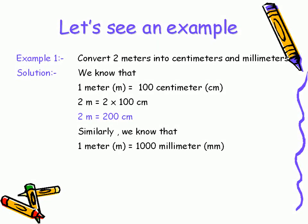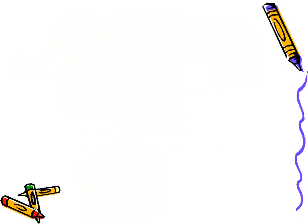Similarly, as one meter is equal to one thousand millimeters, so two meters would be equal to two times one thousand millimeters. Therefore, two meters is equal to two thousand millimeters.